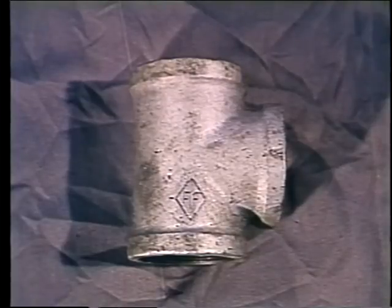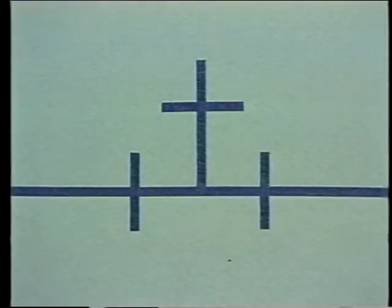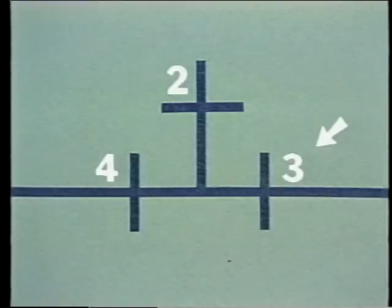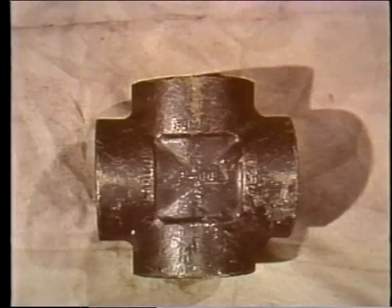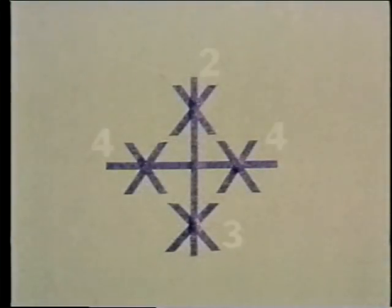A T-fitting allows a branch connection into the system, meaning another pipe is joining the system. There are three joints on any T-fitting. A T-fitting is described by the sizes of its pipes — for example, a 4-inch by 3-inch by 2-inch T means the left pipe is 4-inch, the right pipe is 3-inch, and the branch pipe is 2-inch. The last number is always the branch connection. The last common fitting is the cross-fitting — simply a fitting that joins four pipe ends together.